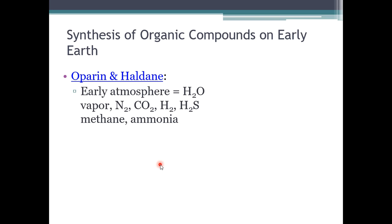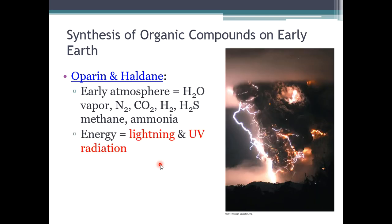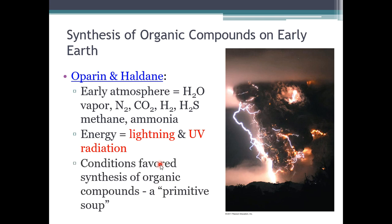Oparin and Haldane came along and said that our early atmosphere was a lot of water vapor, a lot of nitrogen, carbon dioxide, hydrogen gas, hydrogen sulfide, methane, and ammonia. So that was what our early atmosphere looked like. And there was energy on the planet in the form of lightning — so there was storming happening, even though there were no living things — and ultraviolet radiation from the sun. And those conditions favored the synthesis of organic compounds. Within the Earth, even though there were no living things, organic compounds were being formed because we had all of these molecules as reactants, and then we had energy to allow the synthesis of organic compounds with those reactants.